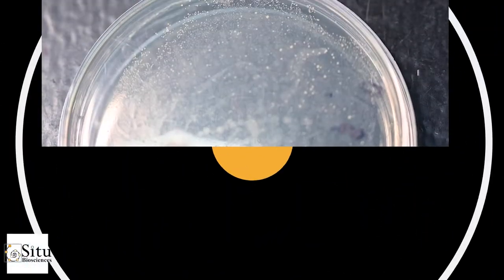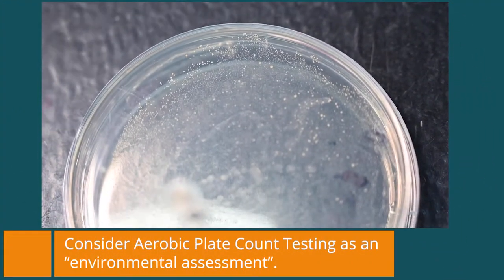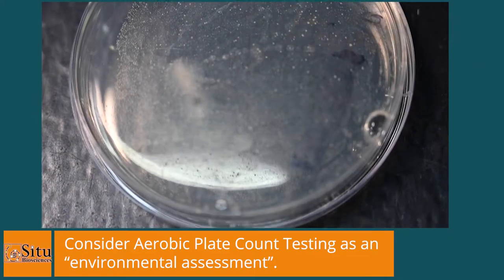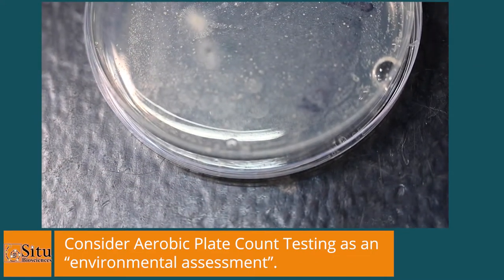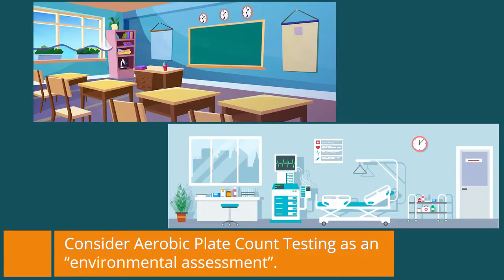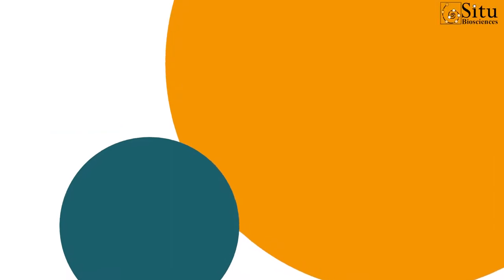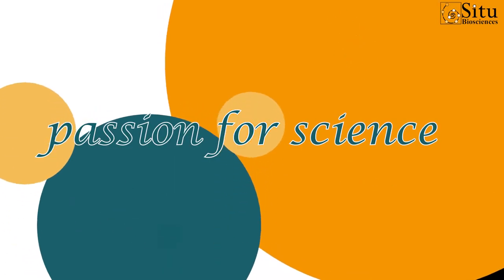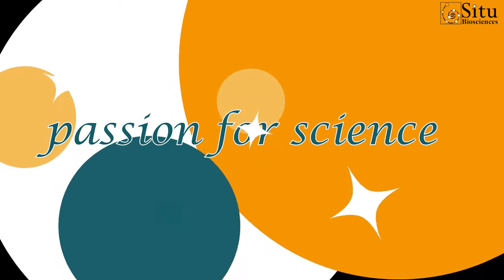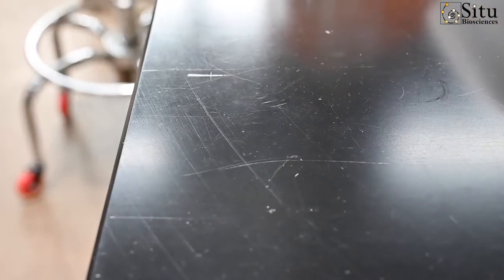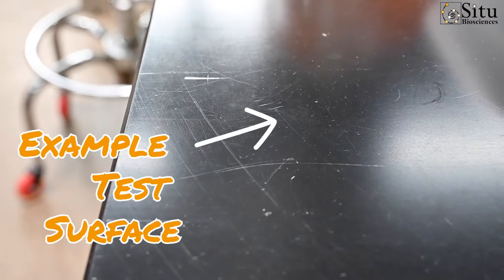It may be helpful to consider this type of test as an environmental assessment. For example, the test surface could be a tabletop in a certain type of environment such as in a school or medical setting. Both of these environments have their own implications, some of which aren't always anticipated. This is where CTU's passion for science and expertise shines through as we help customers consider finer details in testing.